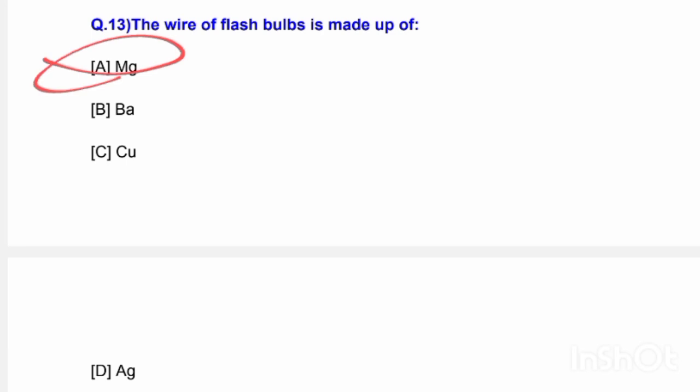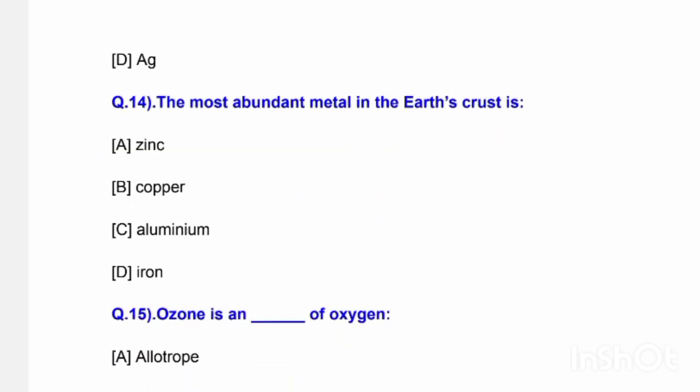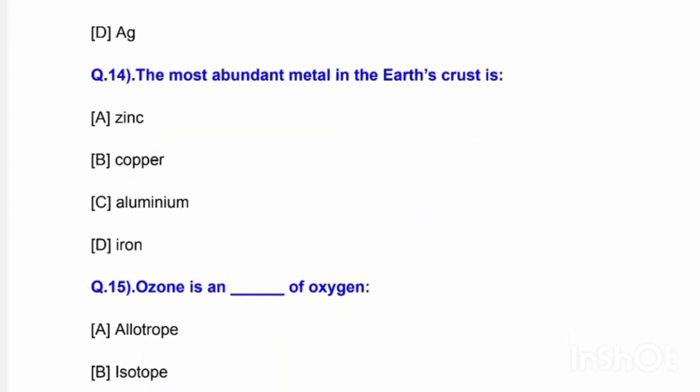Next question: The most abundant metal in the earth's crust is — options are zinc, copper, aluminium, and iron. The correct answer is option C — aluminium is the most abundant metal in the earth's crust.